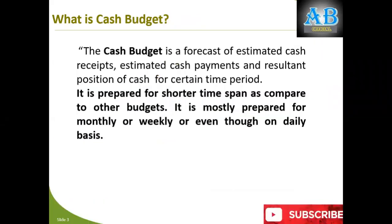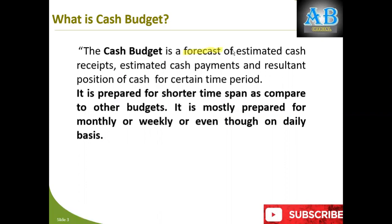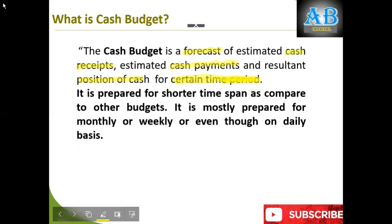So what is cash budget? Cash budget is a forecast about three things. First, about cash receipts. Second, about cash payments. And third, what would be the cash position for a certain time period — how much receipts you will have, how many payments you will make, and how much cash you may have at the end of that particular time period. It is always prepared for a shorter time span as compared to other budgets, as we discussed in our previous session.